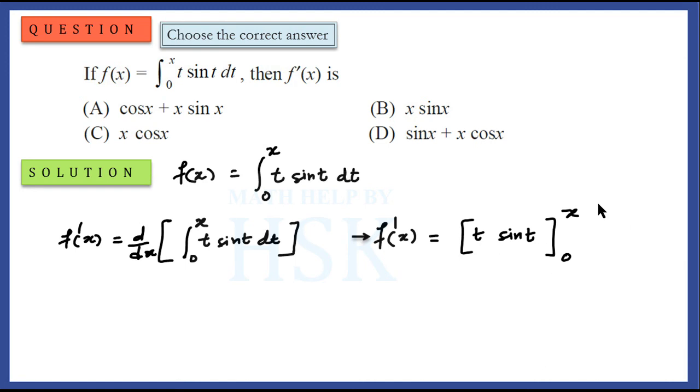according to which the limits are given. That is, as the limits are given, we place the limits. Now we can easily solve f'(x) because this will be equal to x sin x minus 0 sin 0, or simply equal to x sin x. That is, placing first x, then 0, and subtracting it.